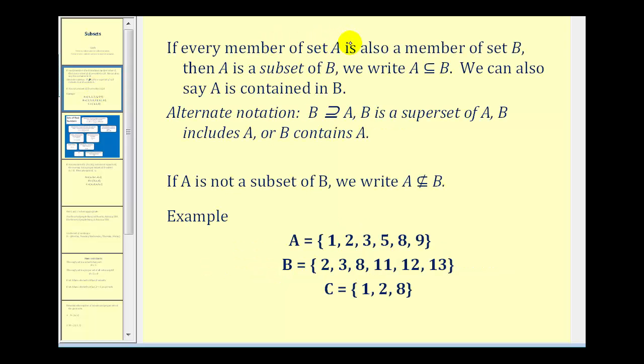If every member of set A is also a member of set B, then A is a subset of B, and we use this notation here. We can also say that A is contained in B. And there is an alternate notation. If we switch the order of the notation, we can say that B is a superset of A, or that B includes A.